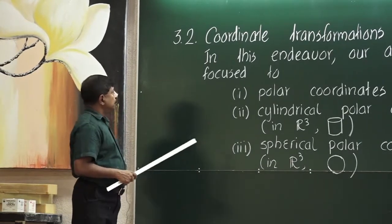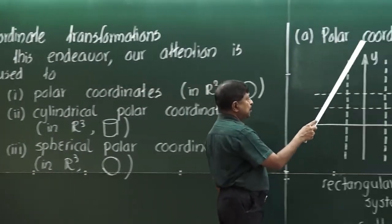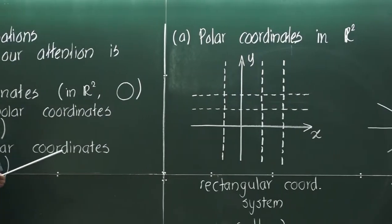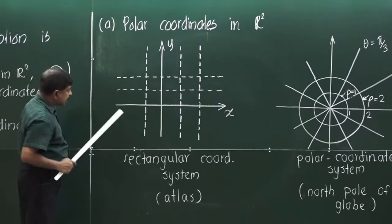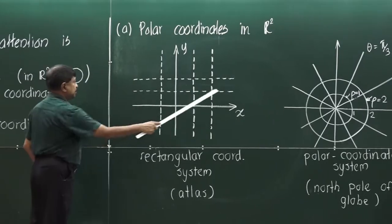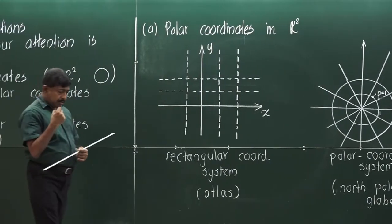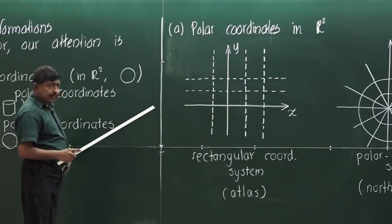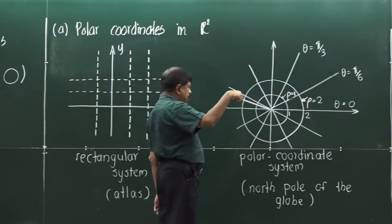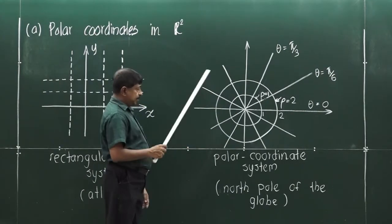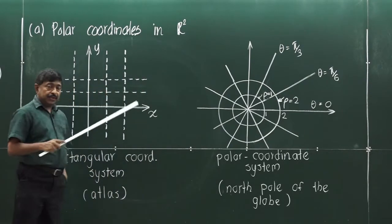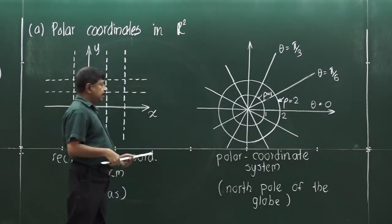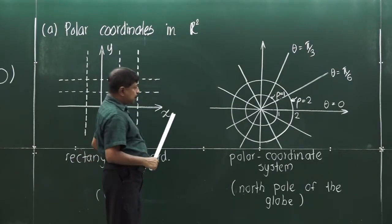Now we will move to part one, part A — polar coordinates in R2. We are familiar with the rectangular coordinate system, which looks like an atlas, where the grid lines can be understood as longitudes and latitudes. On the other hand, if you consider a globe and look at it from the top, the north pole looks like a polar coordinate system. Because the longitudes and latitudes from that view look like this, this system is called polar coordinates.